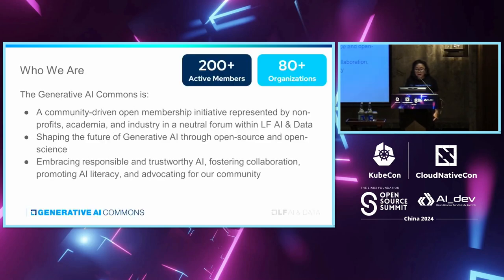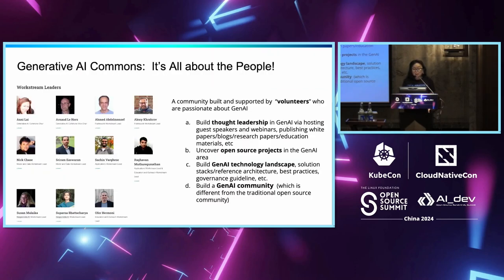Generative AI Commons was created last December to help further the advancement of Generative AI technologies via open source and open science. We currently have over 200 active members from 80 organizations. It is a thought leadership platform for Gen AI ideas and concepts, and also a collaborative platform for open source projects in Gen AI. We subscribe to non-membership, so anybody in the world can join, participate, and hopefully contribute.